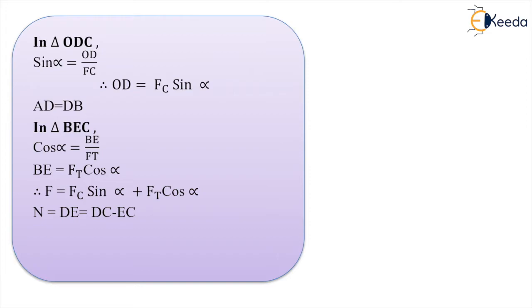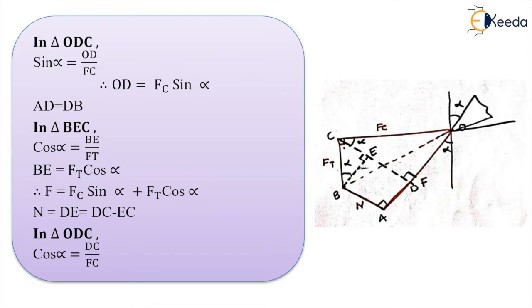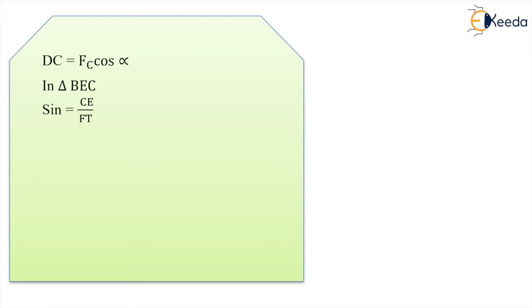In the same fashion we can also find the value of N. N equals EF, and EF equals CD minus CE. CD is from right-angle triangle CDO, and CE is from triangle BEC — sin(α) equals CE divided by ft. We finally get N = fc·cos(α) − ft·sin(α). Here also we have the relation between actual forces F and N with the measurable forces fc and ft.